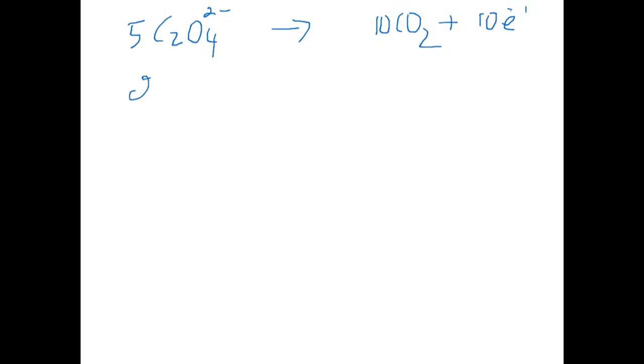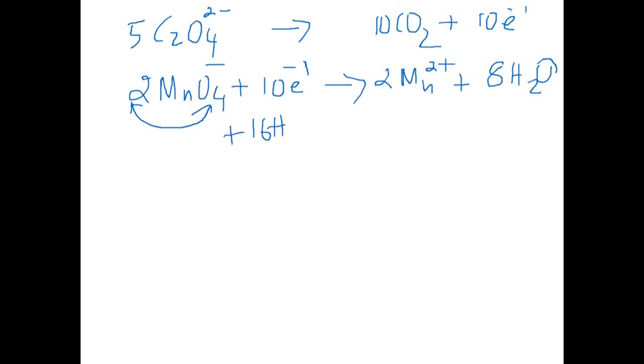The reduction half reaction, we have 2 MnO4^- plus 10 electrons giving you 2 Mn^2+. Plus, we need to balance the oxygen now. 4 times 2, 8 oxygens, therefore makes it 8 H2O, which means we need 16 hydrogen ions, 8 times 2, 16. So we also have to add plus 16 H^+ to balance the hydrogen ions in the water molecules.